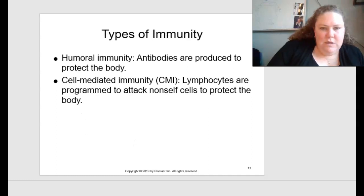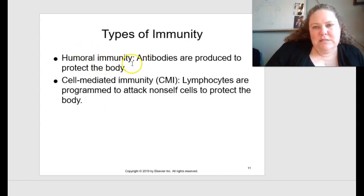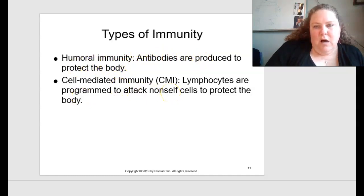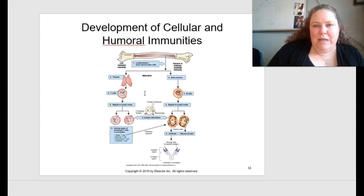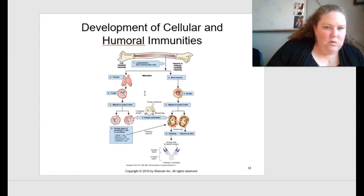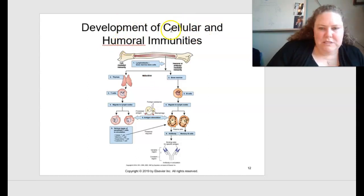For types of immunity, you have humoral immunity, where antibodies are produced to protect the body. You also have cell-mediated immunity, where lymphocytes are programmed to attack invaders to protect the body. It's kind of a one-two punch to keep our body as healthy as possible. The development of cellular and humoral immunities is shown in figure 7.2 on page 117.